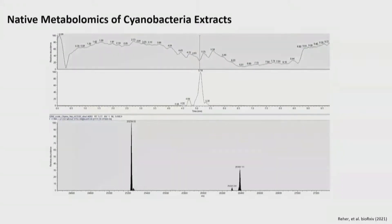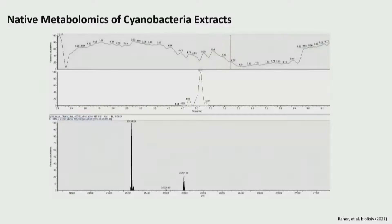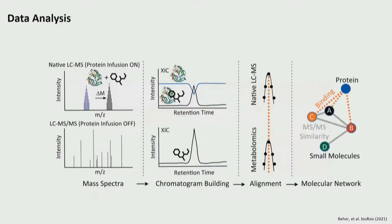As we start scrolling through this chromatogram, on the right we see all these new peaks appearing — basically every couple of seconds, as another metabolite elutes, we see potentially a new molecule binding. I think this really shows the depth of how many putative binders are in this particular sample.